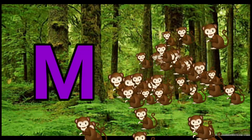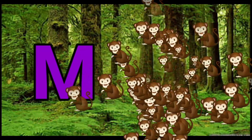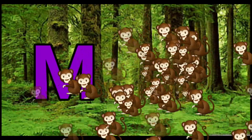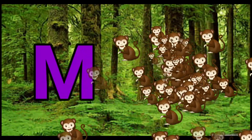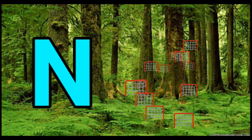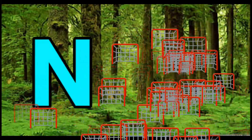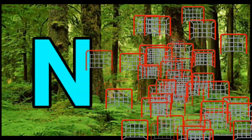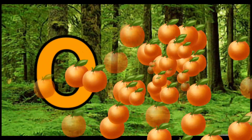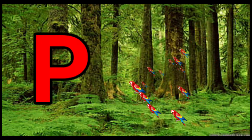M is for... N is for Net, N-N-Net. O is for Orange, O-O-Orange. P is for Pet, P-P-Pet.